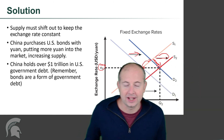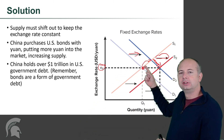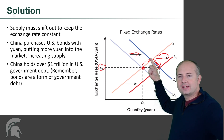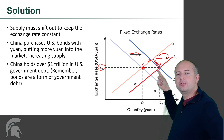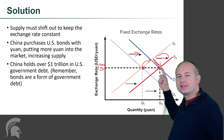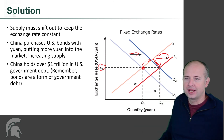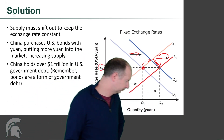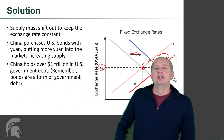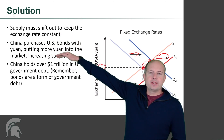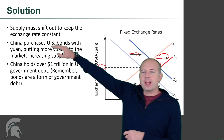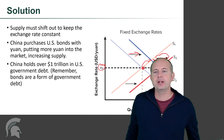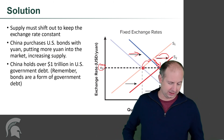In order for China to keep that exchange rate constant, China needs to move the supply to the right in order to push the exchange rate back down. The increase in demand moves us up; now we need to move us back down, and that's done by increasing supply. China is going to purchase bonds with yuan, putting more yuan into the market and increasing supply.